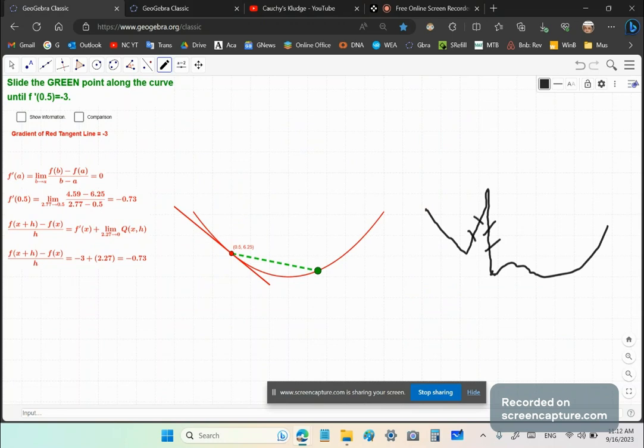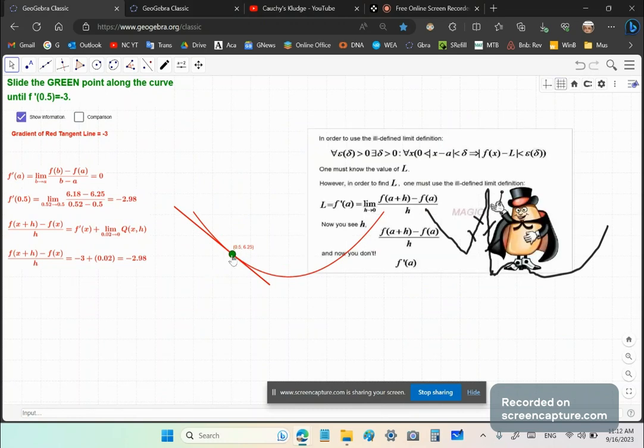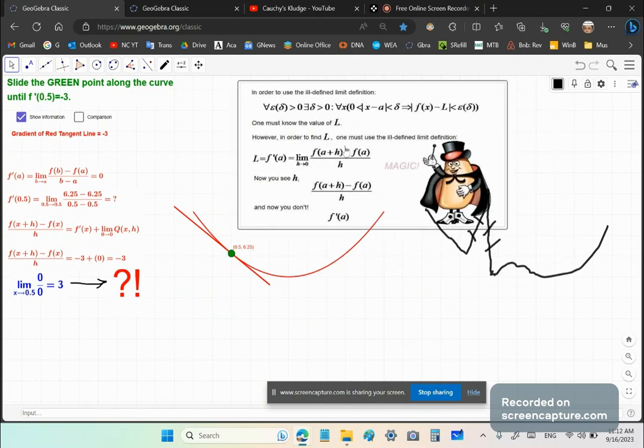So the stupid cranks of mainstream mathematics academia don't get the point that this definition here is utter garbage. And of course it's defined everywhere except at the point of tangency where it's meant to be defined. So if we take the limit of this difference quotient at the point of tangency the derivative doesn't exist. So this is what I call Cauchy's Cluj.